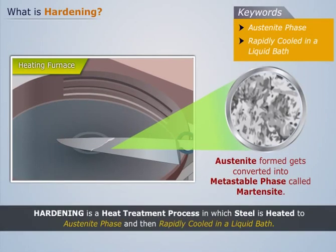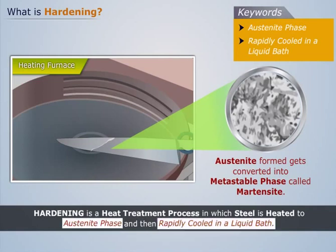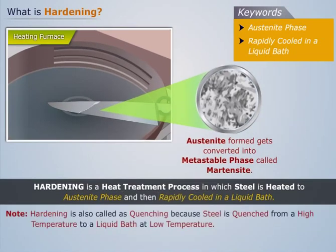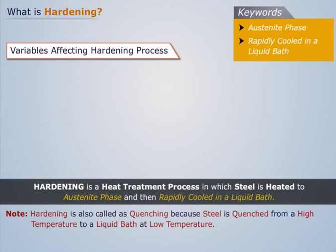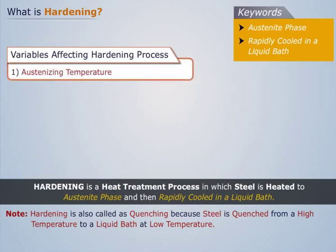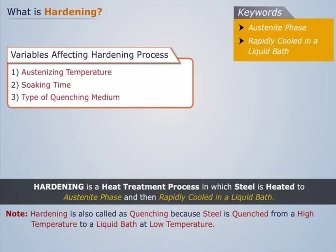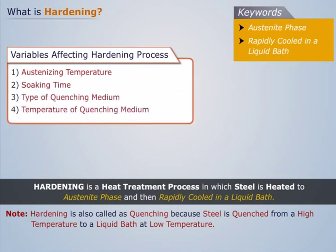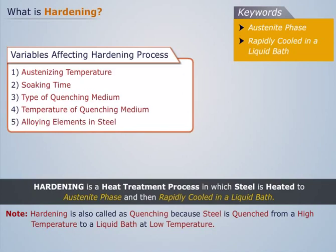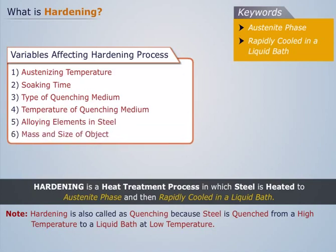This process of heating and rapidly cooling hot steel is called hardening. Hardening is a heat treatment process in which steel is heated to the austenite phase and then rapidly cooled in a liquid bath. Note that hardening is also called quenching, because steel is quenched from a high temperature to a liquid bath at low temperature. Some of the variables that affect the hardening process are: austenitizing temperature, soaking time, type of quenching medium, temperature of quenching medium, alloying elements in steel, and mass and size of the object.